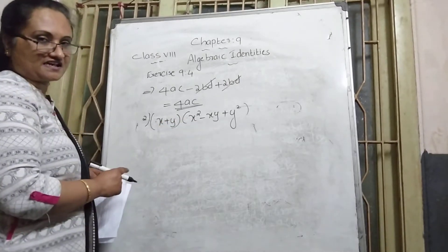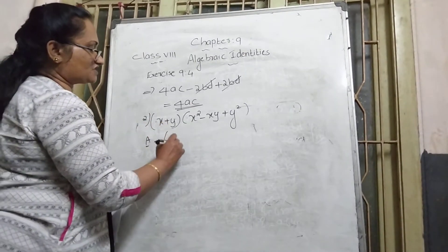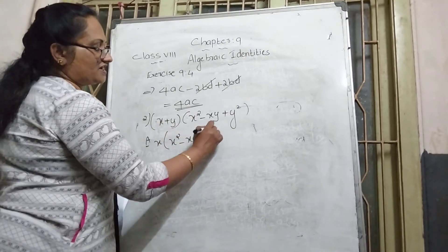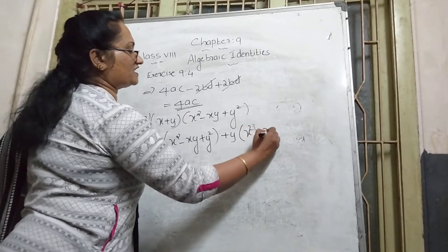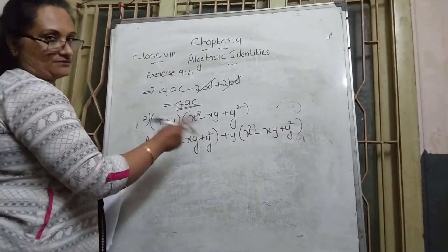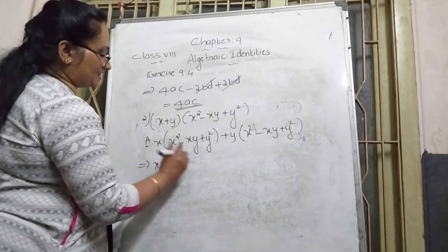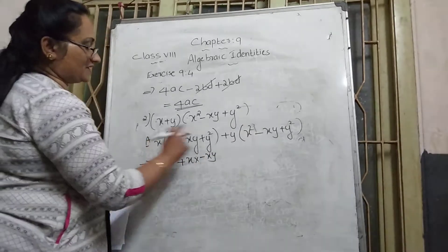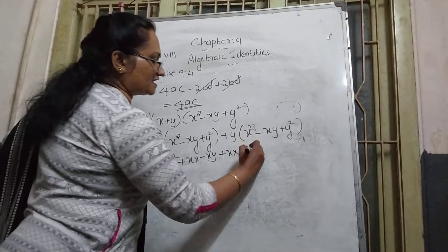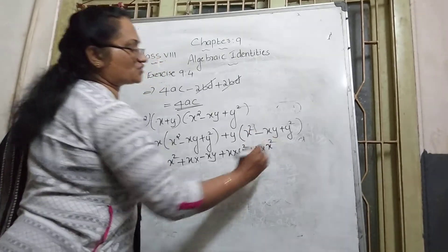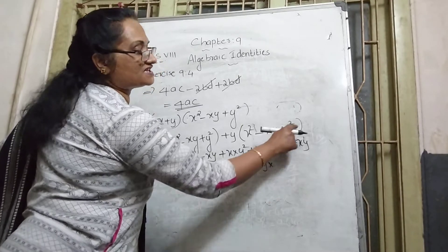Here also two brackets are there. The question asks us to simplify — find the product. First bracket's first term x is multiplied with the second bracket (x² − xy + y²). Then the second term y is also multiplied with the second bracket (x² − xy + y²).